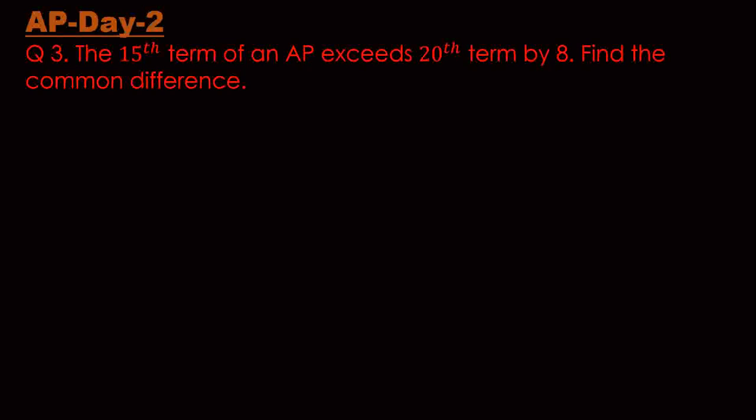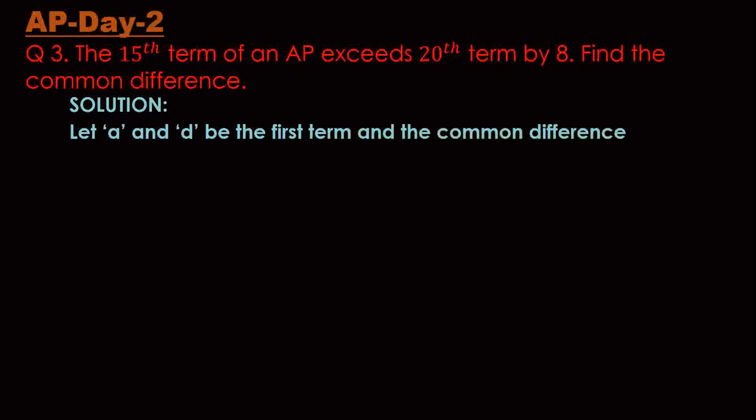The solution: let 'a' and 'd' be the first term and the common difference. Here, a₁₅ should be equal to a₂₀ + 8. Remember, the 15th term is 8 more than the 20th term, so that means a₁₅ = a₂₀ + 8.